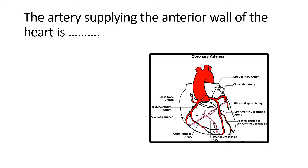The two coronary arteries are the right coronary artery and the left coronary artery. The right coronary artery goes further and divides into two branches: the acute marginal artery, and the posterior descending artery, which goes to the posterior side and descends down.